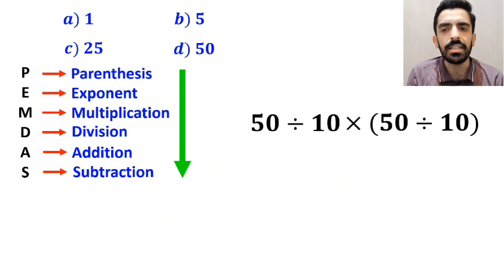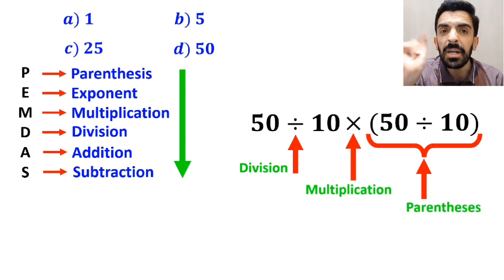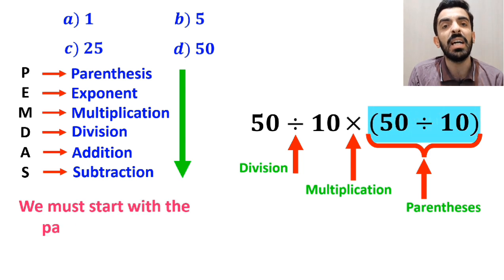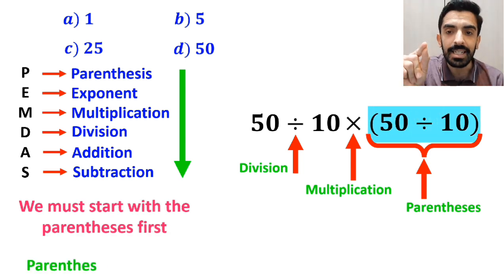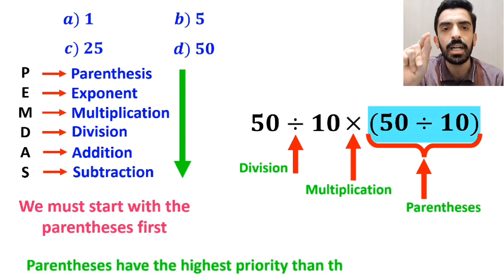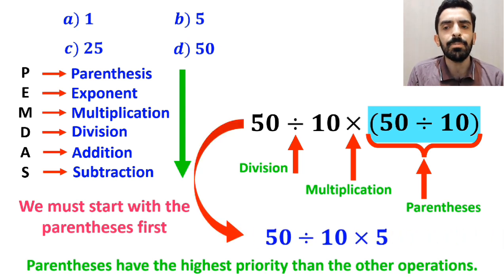As you can see on the screen, in this expression, first we have a division sign, then a multiplication sign, and finally parenthesis. According to the PEMDAS rule, we must start with the parenthesis first because parenthesis have the highest priority compared to the other operations. So we can rewrite this expression as 50 divided by 10, then times 5.